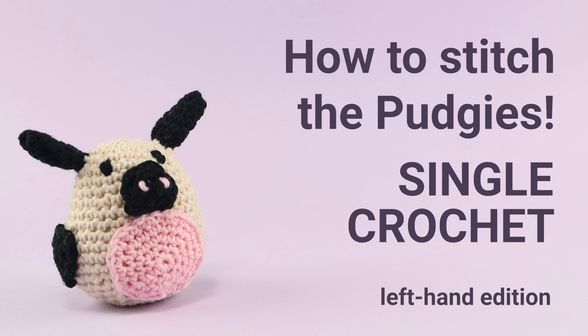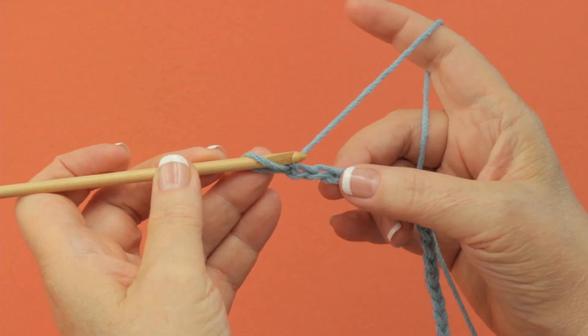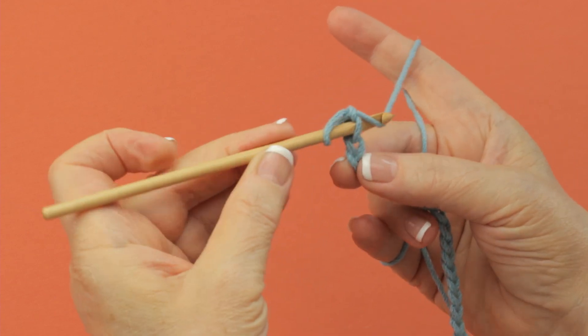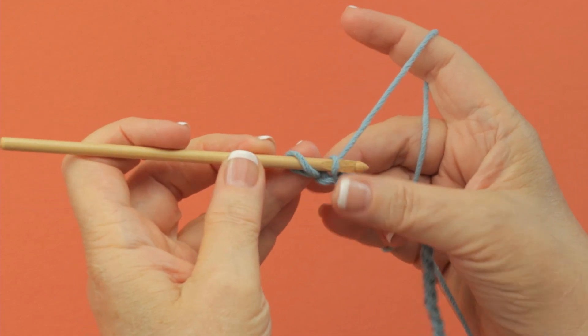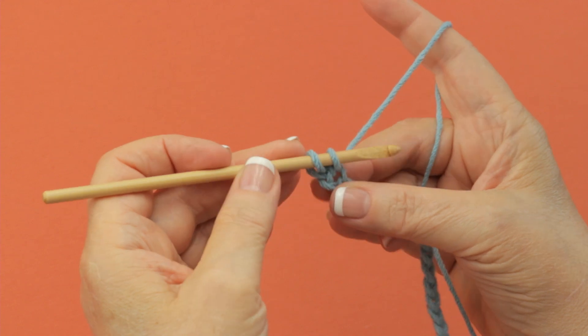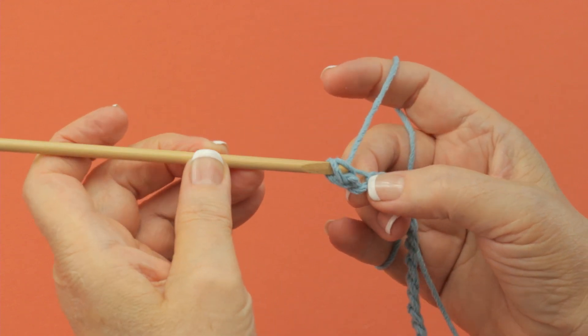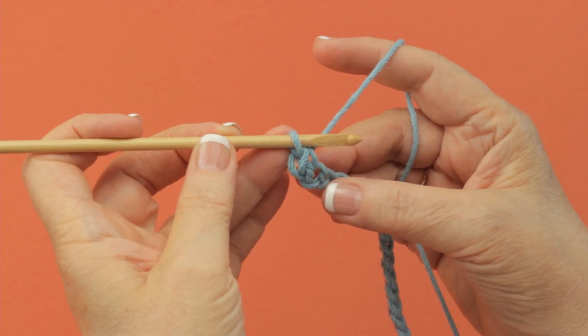To work a single crochet, you're going to insert your hook into the second chain from the hook, yarn over, pull up a loop. You have two loops on your hook, yarn over, draw through both of those loops. That is what makes a single crochet.